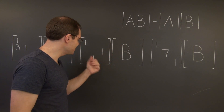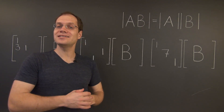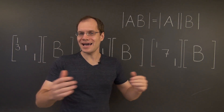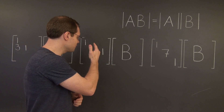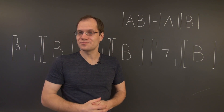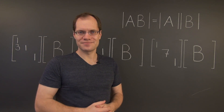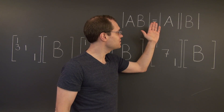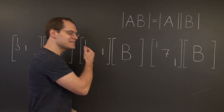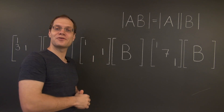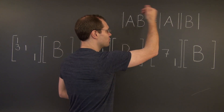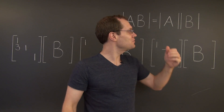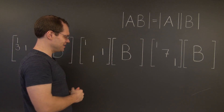Now let's move on to this kind of elementary matrix: a single switch away from the identity. On the left-hand side, we have the determinant of this product, which equals minus the determinant of B, because the effect of this matrix on B is to switch two of its rows, which changes the sign of the determinant. So on the left-hand side, we have minus the determinant of B. On the right-hand side, we have the determinant of A, which equals minus one, because this matrix is a single row switch away from the identity, times the determinant of B. So on the right-hand side, we also have minus the determinant of B. And once again, we see that this identity holds when A is this kind of elementary matrix.